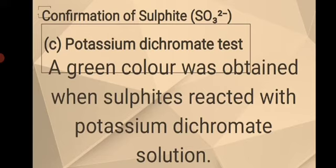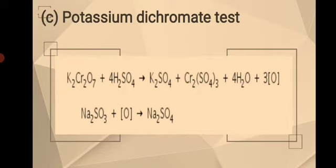For the third test for the confirmation of sulfite, which is the potassium dichromate test: based on the theory from olabs.com, a green color is obtained when sulfites react with potassium dichromate solution. In the experiment, after adding potassium dichromate solution acidified with dilute sulfuric acid to a portion of the aqueous solution of salt, a green color was observed. It was concluded that the test confirmed the presence of sulfite ion. The result shows the solution with a green coloration.